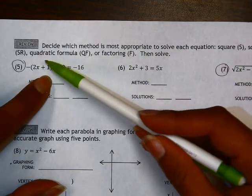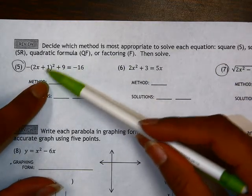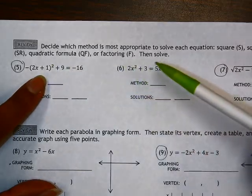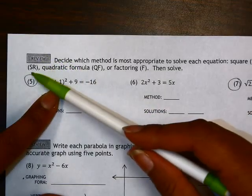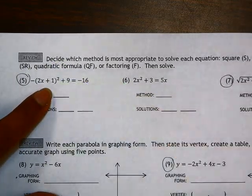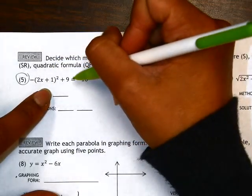So on number 5, key thing to notice here is you have this quantity squared. So eventually we're going to need to square root to get rid of that squared. So before we can use the square root method, let's isolate the quantity that's being squared.